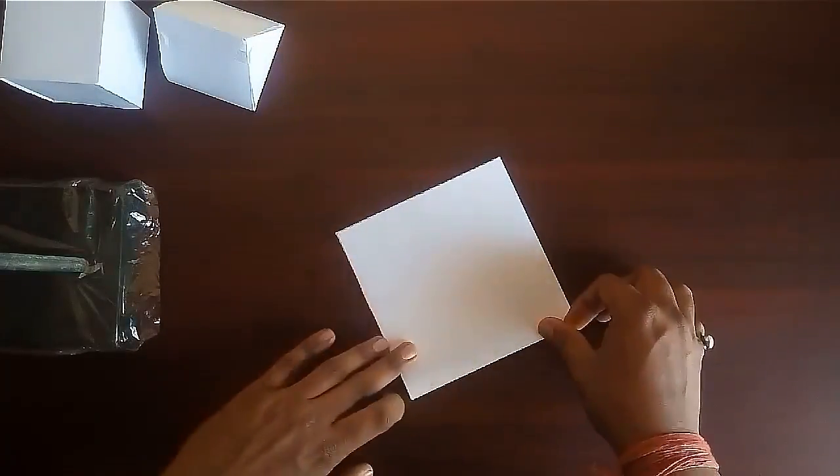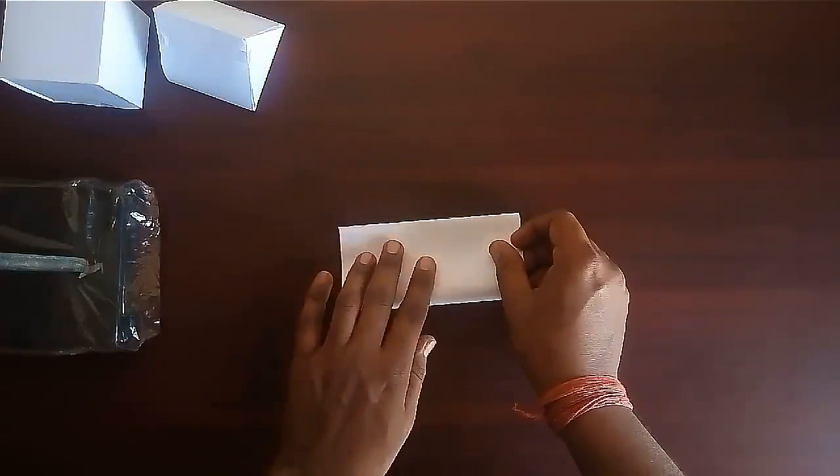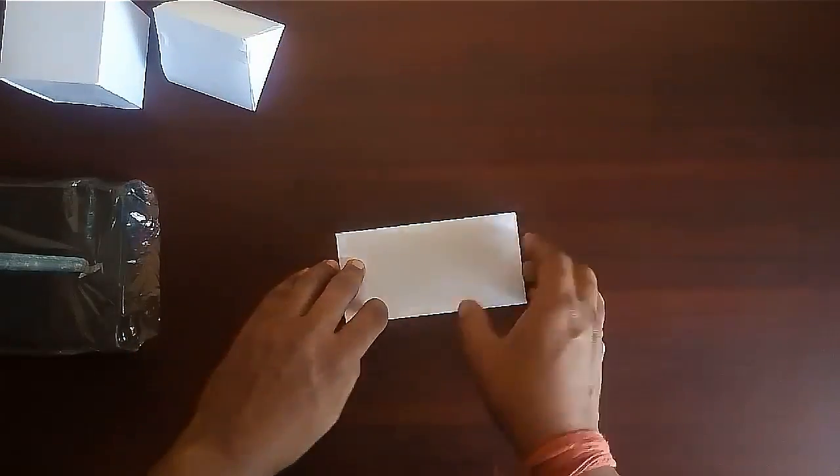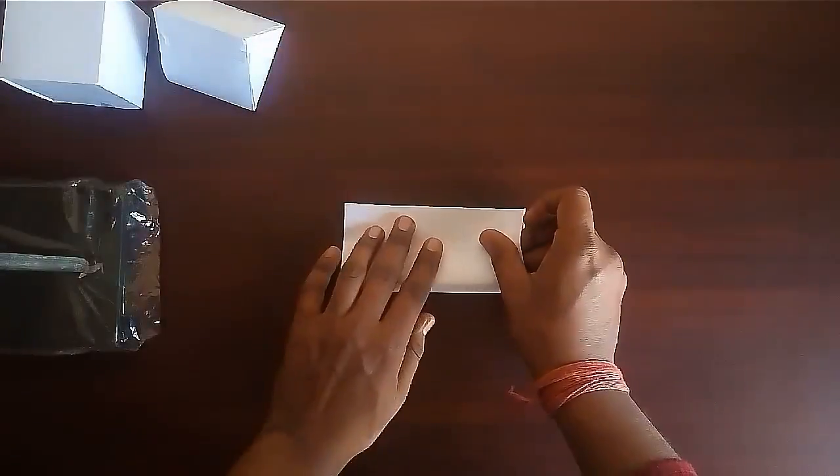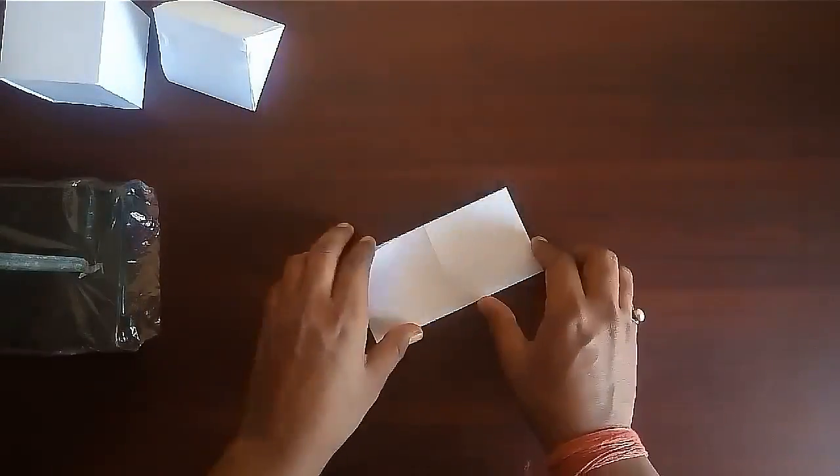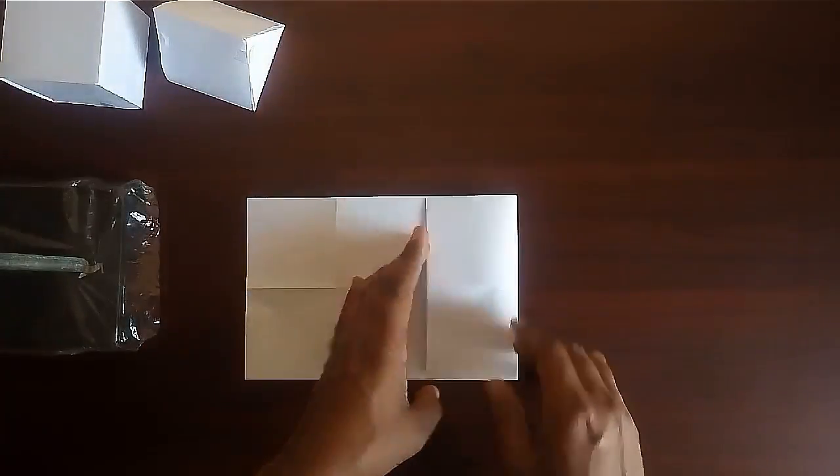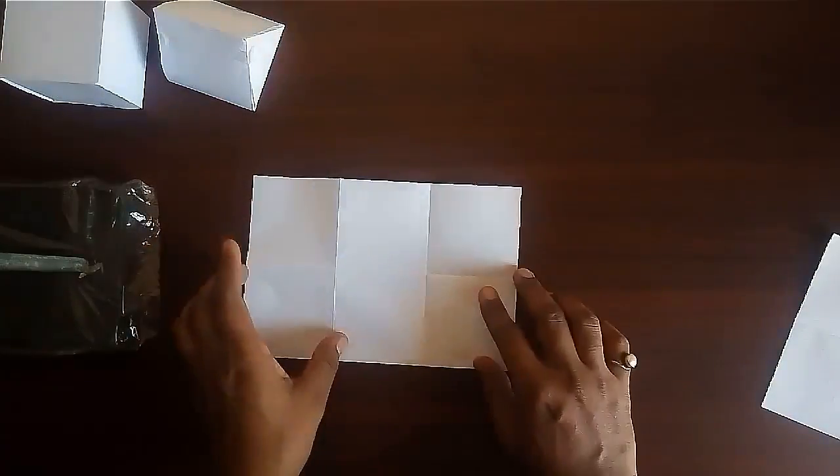Fold it to half and further fold it to half. Now fold it to half from the other side also. In this way our sheet is divided into 8 equal squares.